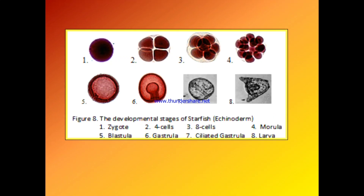Here you can see the developmental stages of starfish: the first stage is zygote, then four-cell stage, then eight-cell stage, then morula stage, then blastula stage, then gastrula stage, then ciliated gastrula, and then larva. From the larva, an adult starfish is developed.